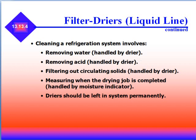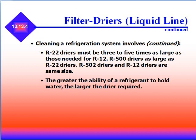Cleaning a refrigerant system involves removing water (handled by the dryer), removing acid (also handled by the dryer), filtering out circulating solids, and measuring when the dryer is fully saturated. Dryers should be left in the system permanently. R22 dryers must be three to five times as large as those needed for R12. R500 dryers are as large as R22 dryers, and R502 and R12 dryers are the same size. The greater the ability of the refrigerant to hold water, the larger the dryer required.